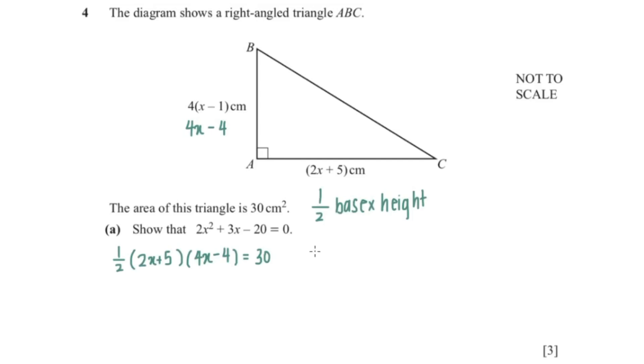So now I'm just going to bring 1 over 2 to the other side. So that would be 2x plus 5 multiplied with 4x minus 4. 30 times 2 is 60. And now I'm just going to expand this bracket. So that is 8x squared minus 8x plus 20x minus 20 equals 60.